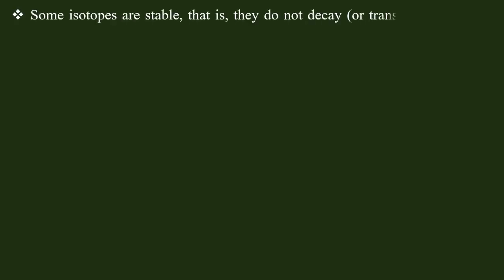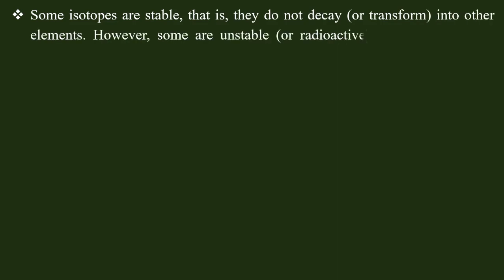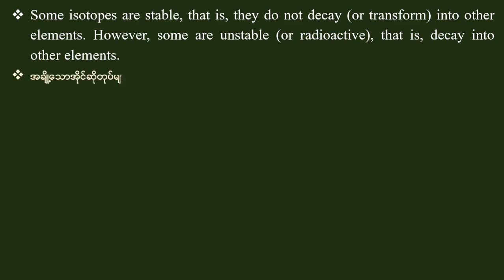Some isotopes are stable — that is, they do not decay or transform into other elements. However, some are unstable or radioactive — that is, they decay into other elements.